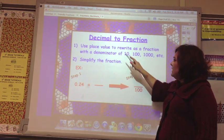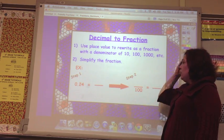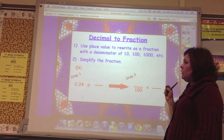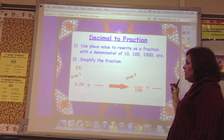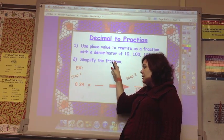So under decimal to fraction, you're going to write these notes. The first step is to use place value to rewrite as a fraction with a denominator of 10, 100, or 1,000. And then the second is now you do simplify the fraction.